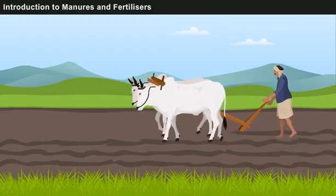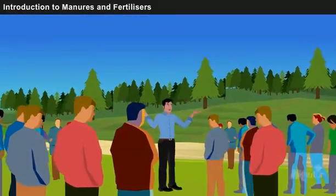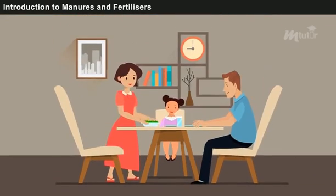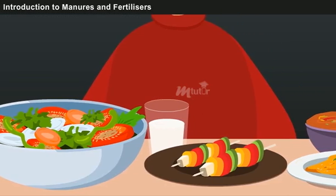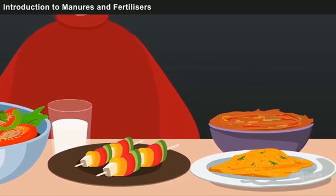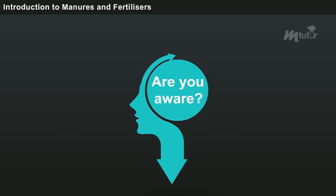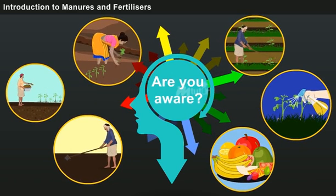Agriculture is one of the major professions for many people all over the world. We human beings solely depend on agriculture to satisfy all our daily food needs and to sustain life on earth. It is one of the reasons why we have the liberty of choosing so many food types and flavors. Are you aware of the several factors that are involved in agriculture which provides us with disease-free and nutritious food?